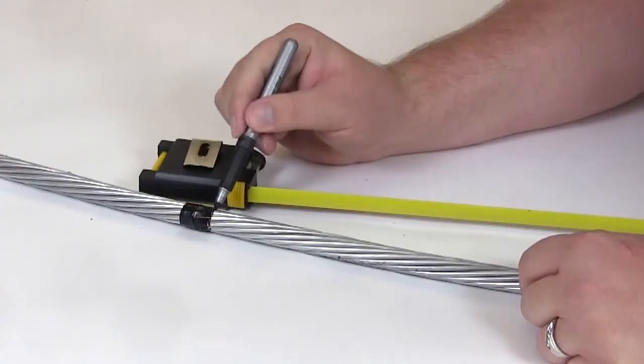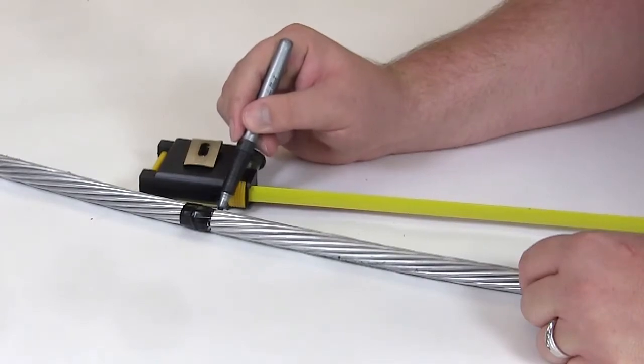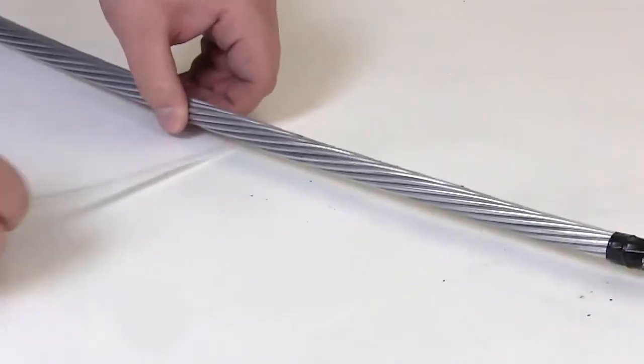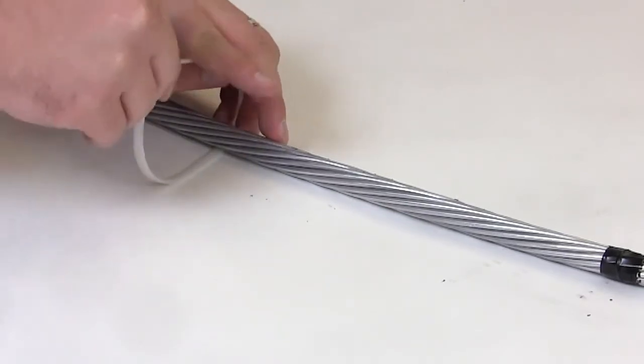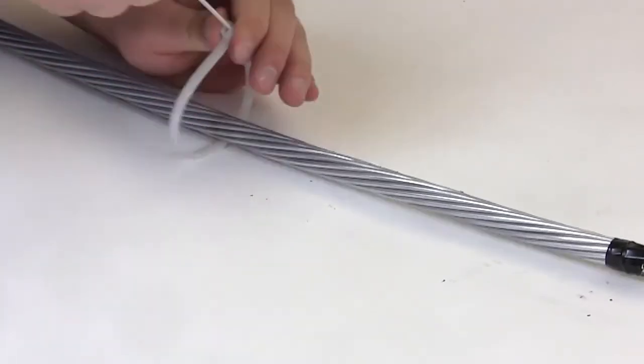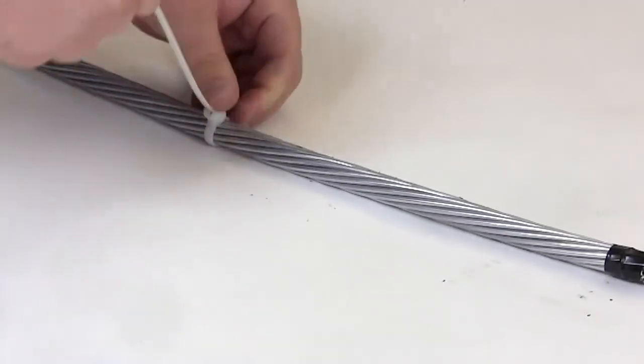Begin by marking the cable at the location that will be placed under the connector kit. Place a zip tie or electrical tape around the cable approximately two feet behind the mark. This secures the outer wires from unstranding during subsequent handling of the cable.